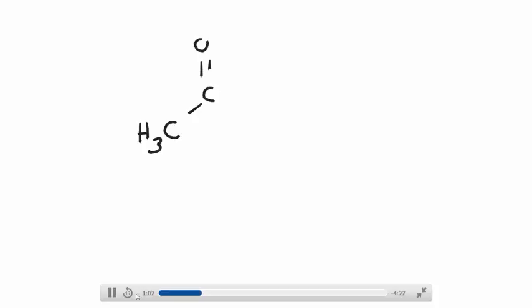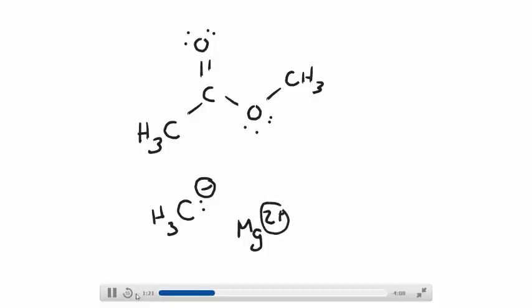First off, you have a Grignard reagent, and I hope you remember that Grignard reagents are extremely reactive. They're very strong bases. If you do not have an acidic proton, you're going to act as a nucleophile if you can't act as a base. And I like to draw mine as ion pairs. It's a little easier to see what's going on.